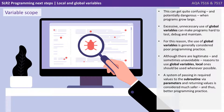This can get quite confusing and potentially dangerous when programs grow large. Excessive, unnecessary use of global variables can make programs hard to test, debug and maintain. For this reason, the use of global variables is generally considered poor programming practice. Although there are legitimate and sometimes unavoidable reasons to use global variables, local ones should be used whenever possible.